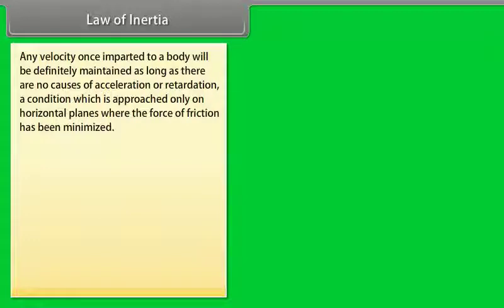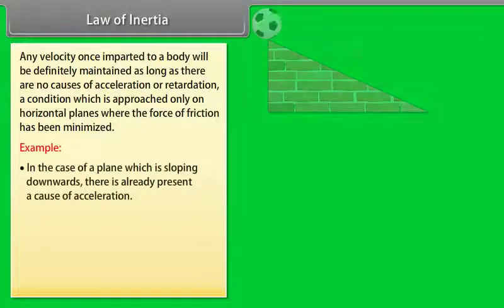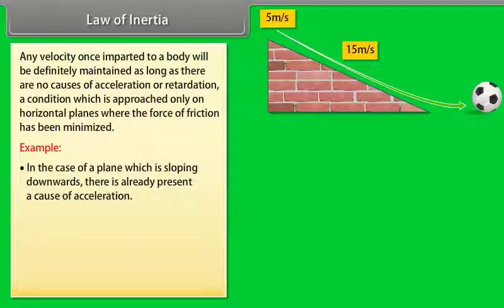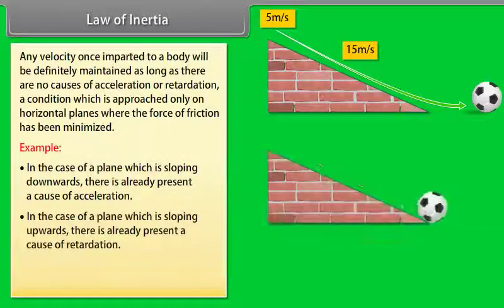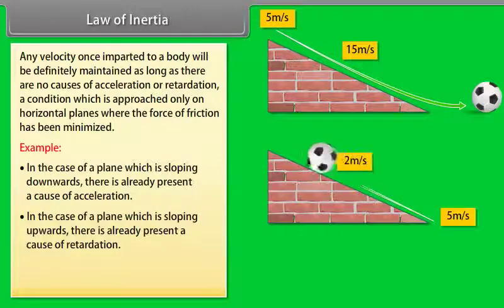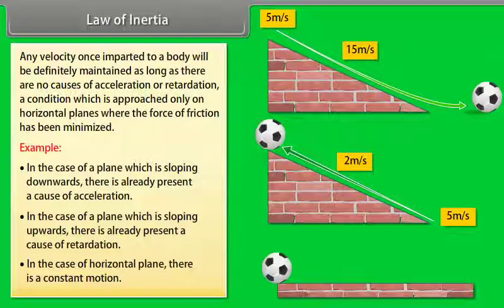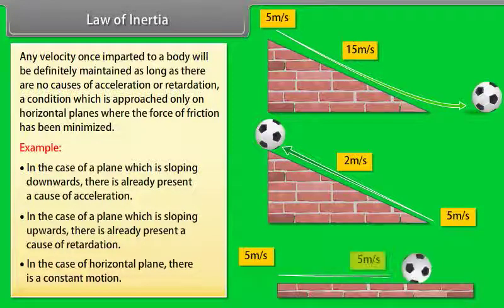Any velocity once imparted to a body will be maintained as long as there are no causes of acceleration or retardation — a condition approached only on horizontal planes where friction has been minimized. In the case of a plane sloping downwards, there is a cause of acceleration. In the case of a plane sloping upwards, there is a cause of retardation. On a horizontal plane, there is constant motion.